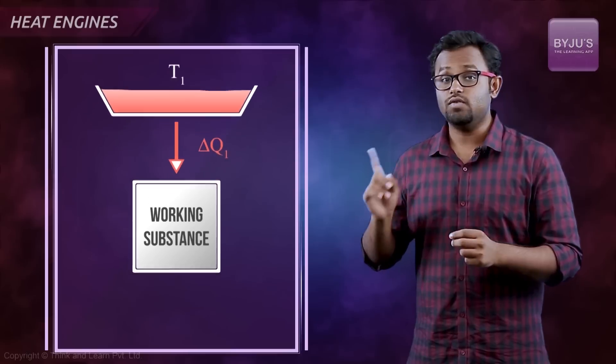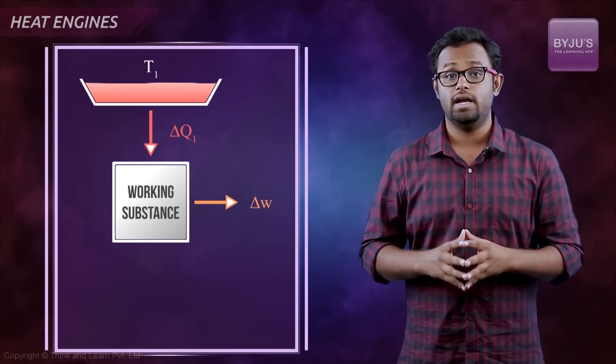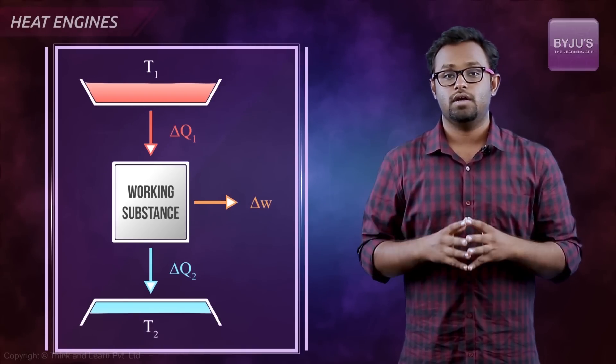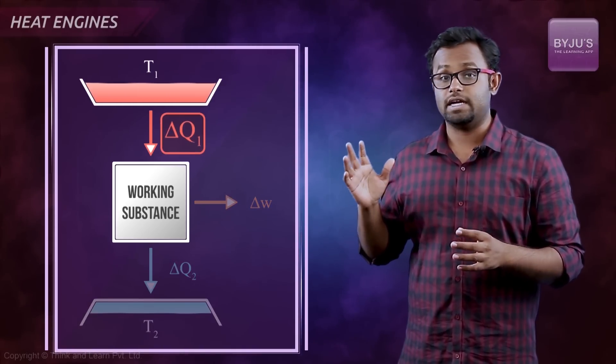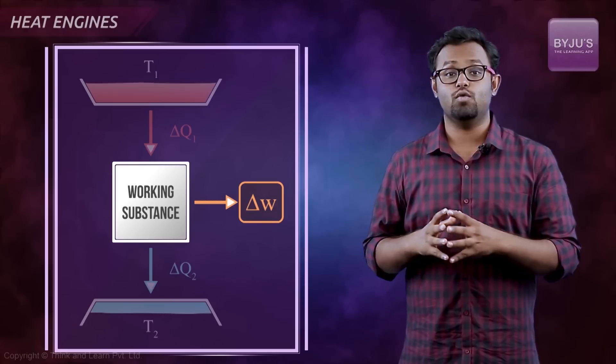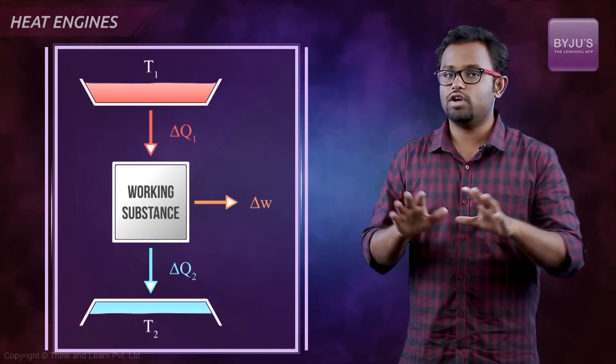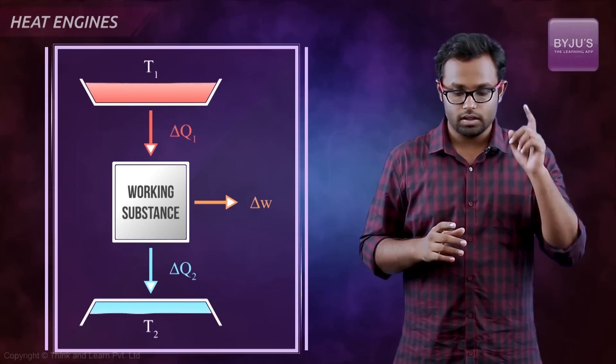What does the working substance do? This working substance does some work on the surrounding, plus it gives off some heat, delta Q2. So we have delta Q1 amount of heat coming in, delta W amount of work being done, and delta Q2 amount of heat given off to the surrounding. Extremely simple.